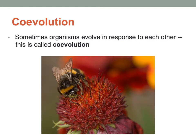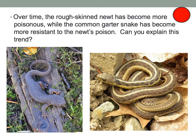One species evolves in response to another. Flowers create pollen, and bees have evolved the ability to collect that pollen and use it to make honey. A rough-skinned newt has become more poisonous, while the common garter snake has become more resistant to the newt's poison because it is the snake's primary food source. Co-evolution: one organism evolves in response to another.